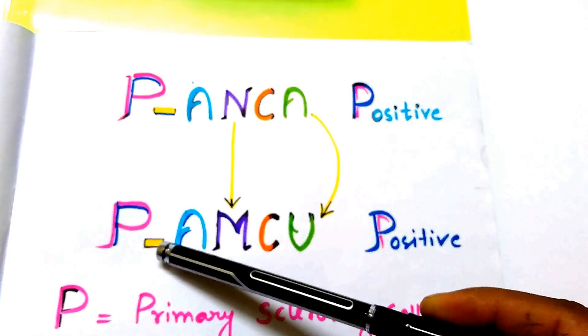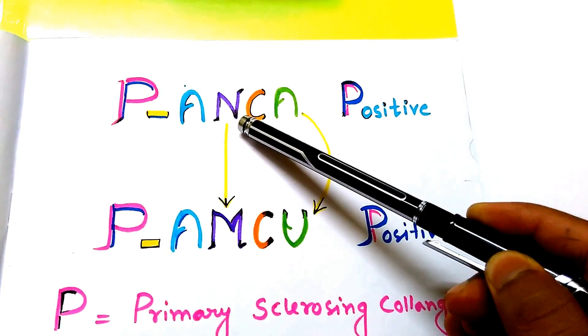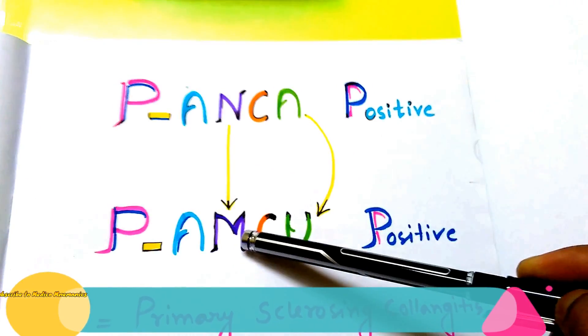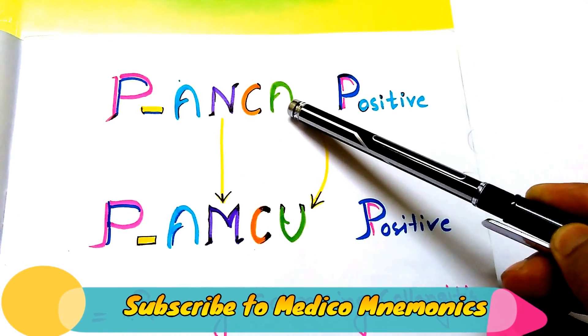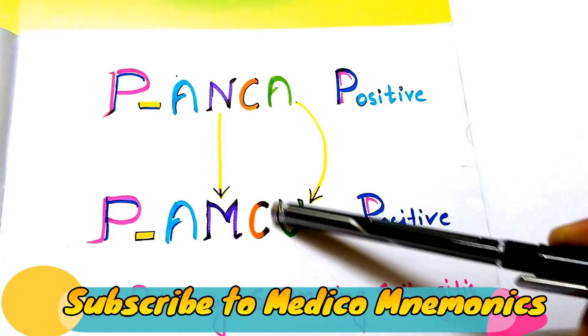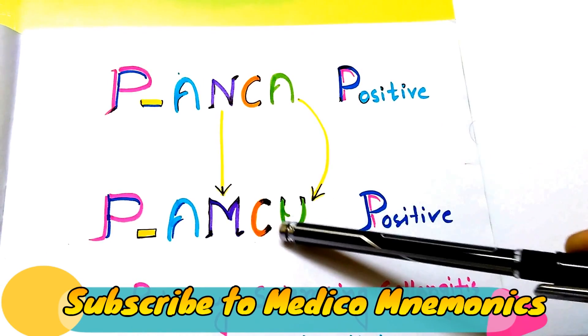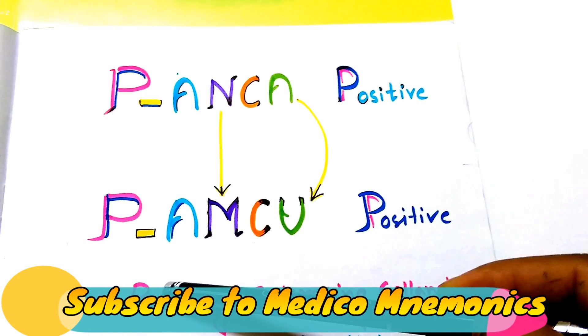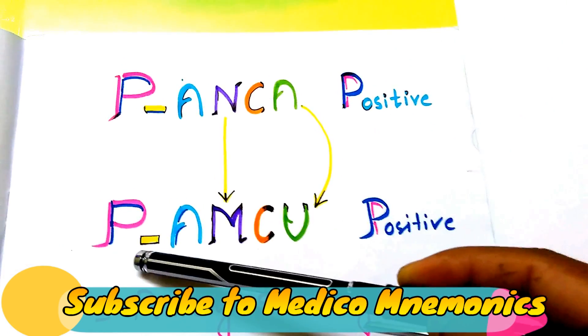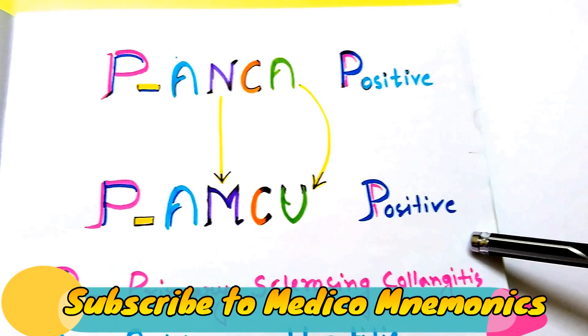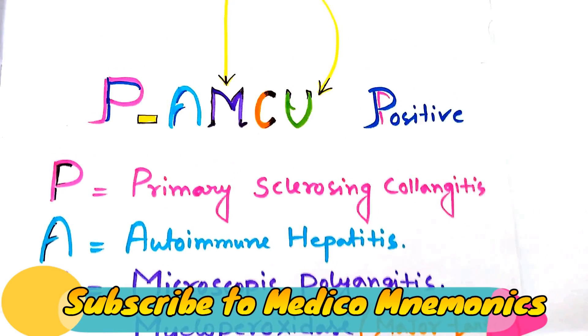From P-ANCA, yes, for the sake of remembering I have made N into M and the A I made an inversion so that it looks like U. Now our mnemonic is P-AMCU positive.